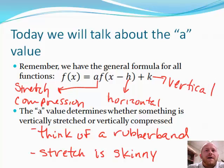The A value determines whether something is vertically stretched or is vertically compressed. So you're either going to make it skinnier or wider. If you think about it as a rubber band, when you stretch a rubber band, it's going to get skinnier. But if you let it go and it compresses, it's going to get flatter. So those are the two shapes we're kind of looking for as we go through this.